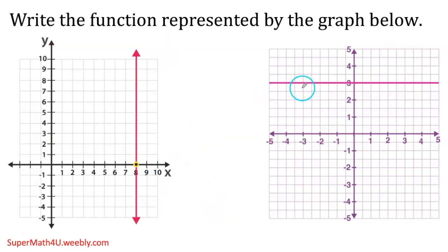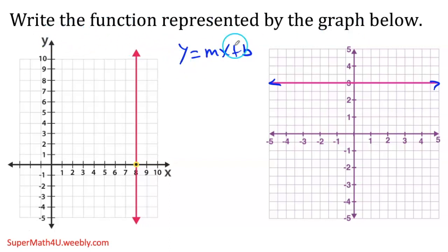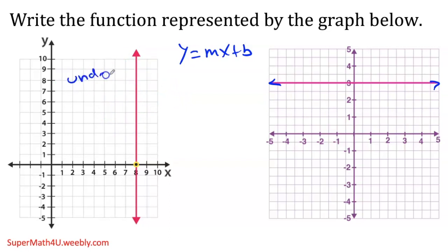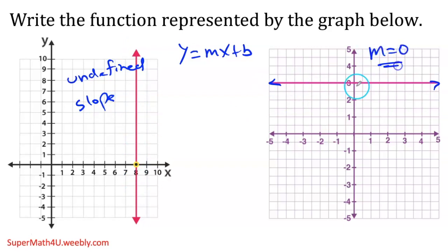The special cases are horizontal and vertical lines — most people get confused trying to use y equals mx plus b here, but that won't work. The slope of a vertical line is undefined. The slope of a horizontal line is equal to zero. Keep those in mind.